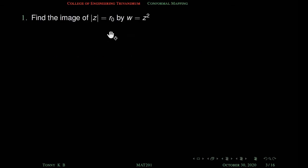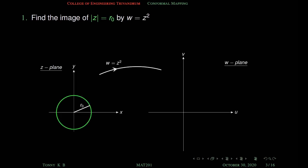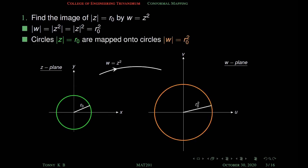Find the image of |z| equal to r₀ under the mapping w equal to z square, where r₀ is a fixed constant. We know |z| equal to r₀ is a circle with center at the origin and radius r₀. Now, |w| equal to |z²| equal to |z|² equal to r₀². So the circle |z| equal to r₀ is mapped to |w| equal to r₀², which is again a circle in the w-plane with center origin and radius r₀². If r₀ is less than 1 then r₀² is less than r₀; if r₀ is greater than 1 then r₀² is greater than r₀.